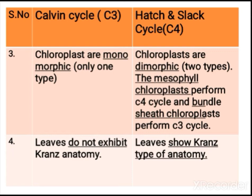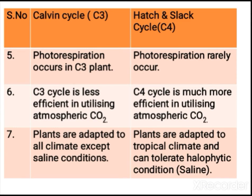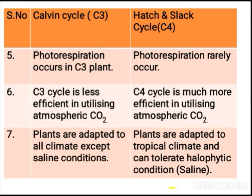C3 plant leaves do not exhibit Kranz anatomy, whereas C4 plants, following the Hatch-Slack pathway, show this special anatomy. Photorespiration occurs in C3 plants, but very rarely in C4 plants. C3 plants are less efficient in utilizing atmospheric carbon dioxide, while C4 plants are more efficient at fixing it. C3 plants are adapted to most climatic conditions except saline conditions, whereas C4 plants can tolerate all climatic conditions, including saline conditions — these are called halophytic plants.